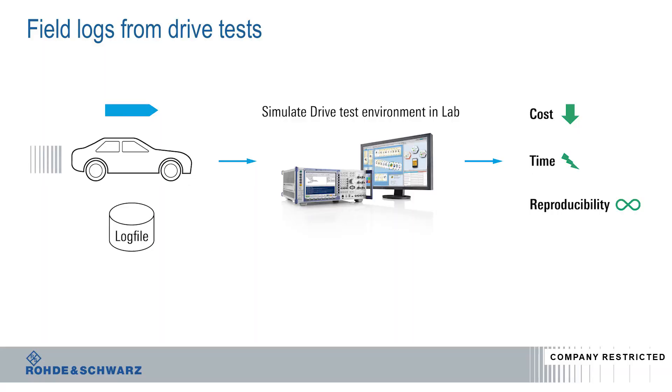Field information, once recreated in lab conditions, can be repeatedly used for testing newer versions and newer models of chipsets and devices, thereby cutting down further need for frequent drive tests. So a sophisticated answer to the earlier question — how can drive tests be made less expensive — is to have the Rohde & Schwarz Field to Lab ecosystem, with which you can quickly reproduce issues seen in the field.